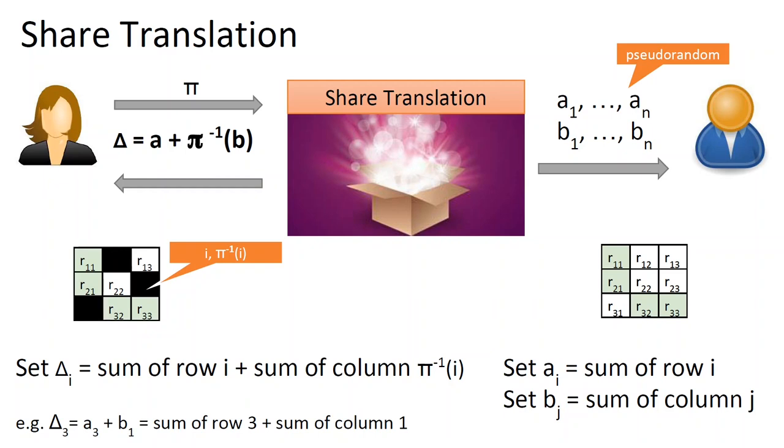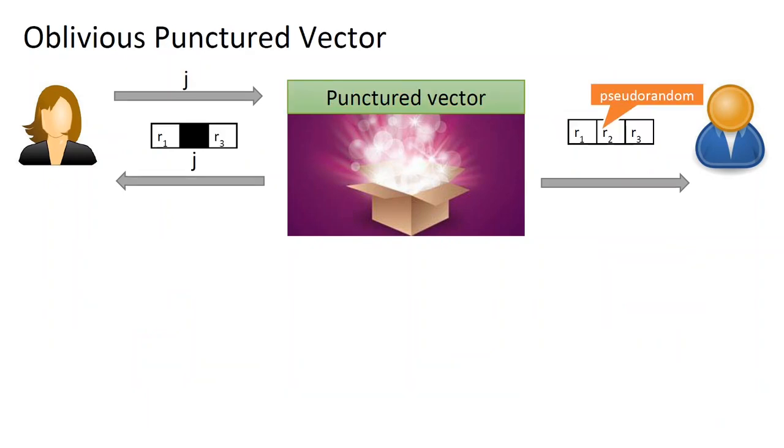Note that this protocol, so far, has computation complexity proportional to the database size squared, because of the matrix. This is too much, and we will take care of it later. For now, it remains to describe how to generate such a matrix, and we will generate it row by row. To generate each row, we will need the following protocol, which we call oblivious punctured vector, and which is very close to n minus 1 out of n OT. Alice inputs some position j, and the functionality generates a vector of pseudorandom values, and sends the whole vector to Bob, but only a partial vector to Alice. In particular, Alice doesn't learn what's at position j. We want a natural security requirement that Bob doesn't learn position j, and Alice doesn't learn the value at position j.